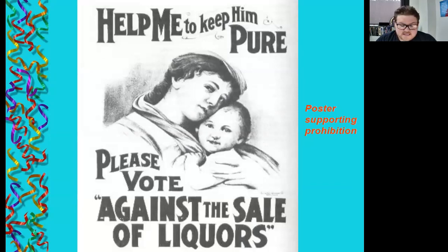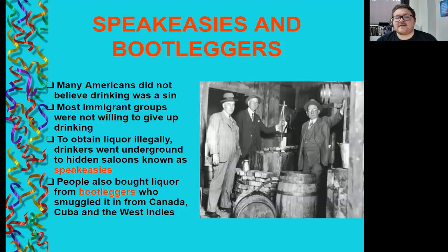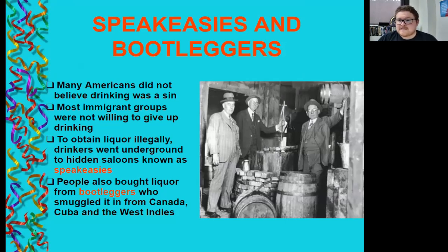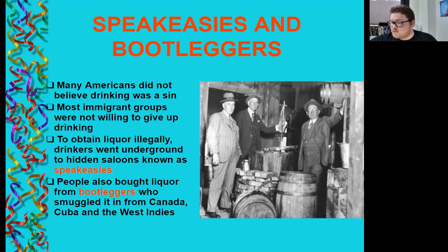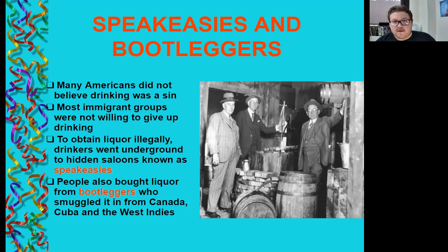This is a poster that supports prohibition in the 1920s. Many Americans did not believe drinking was a sin. Most immigrant groups were not willing to give up their drinking because that was their traditional custom — think Germans. To obtain liquor illegally, drinkers went underground to hidden saloons known as speakeasies. People also bought liquor from bootleggers who smuggled it in from Canada, Cuba, and the West Indies. The hillbillies of Kentucky and West Virginia were also making moonshine and bootlegging.